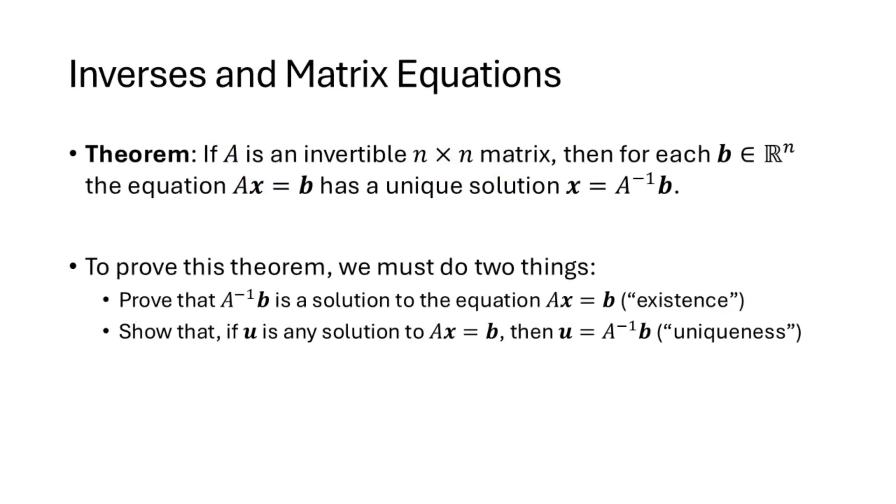Now one thing that's useful about invertible matrices is that when A is an invertible n by n matrix, the equation AX equals B always has a unique solution. And we can say exactly what that solution is: it's X equals A inverse times B. So this theorem needs two things to prove it. We need to prove that A inverse B is actually a solution to the equation AX equals B, and we also need to prove that it's the only solution, that if U is a solution to AX equals B, then U was A inverse B all along.